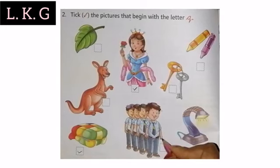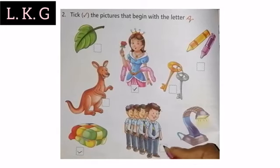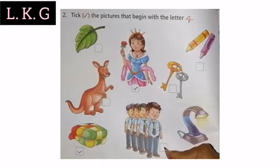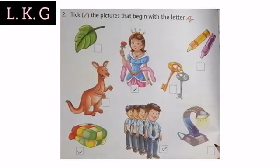Now look at this picture — this is a picture of a queue. Queue starts from Q, that's why we will tick here. This is a picture of a lamp; it starts from L, it doesn't start from Q, so we will not tick here.